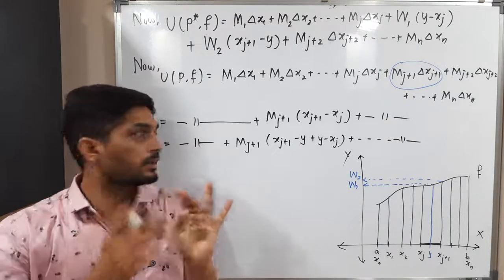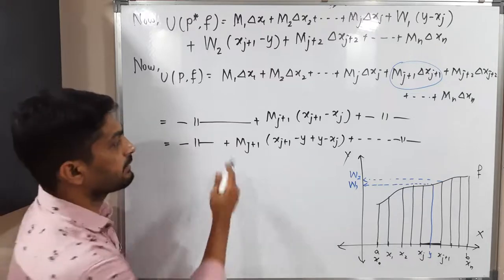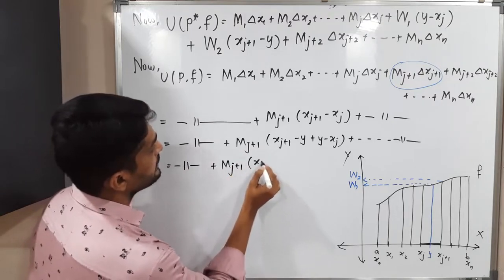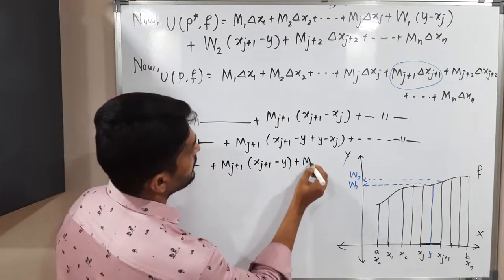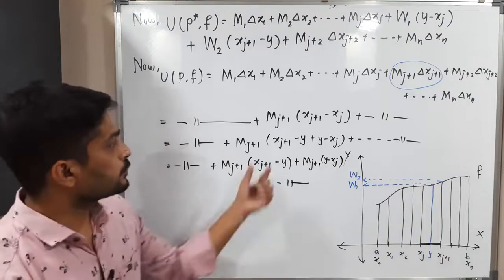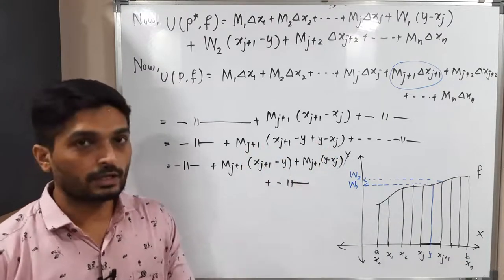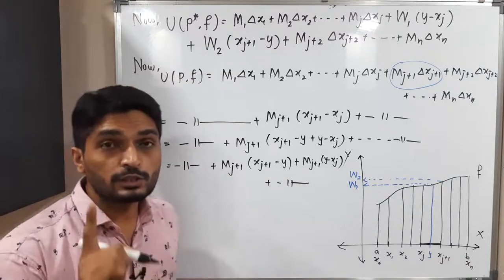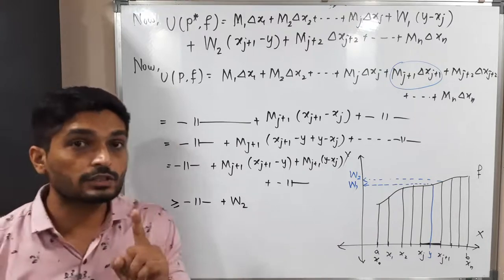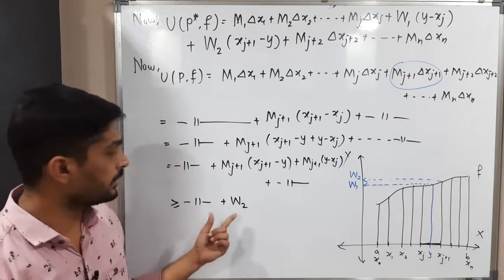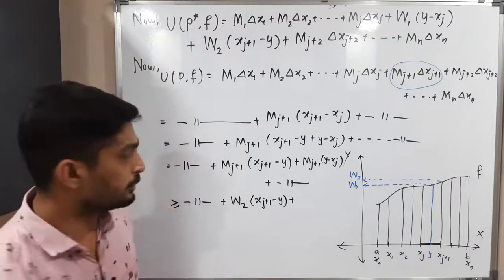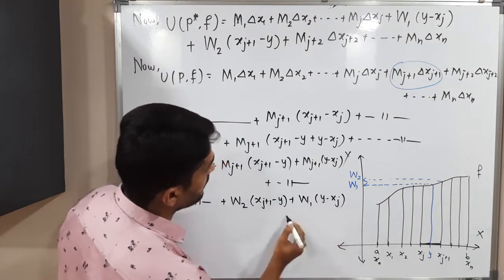There will be four terms; I form two pairs. Multiplying out: Mⱼ₊₁(Xⱼ₊₁ − Y) + Mⱼ₊₁(Y − Xⱼ), plus the remaining terms. Now applying equation (★): Mⱼ₊₁ ≥ W₂, so Mⱼ₊₁(Xⱼ₊₁ − Y) ≥ W₂(Xⱼ₊₁ − Y), and Mⱼ₊₁ ≥ W₁, so Mⱼ₊₁(Y − Xⱼ) ≥ W₁(Y − Xⱼ). The remaining terms are unchanged.